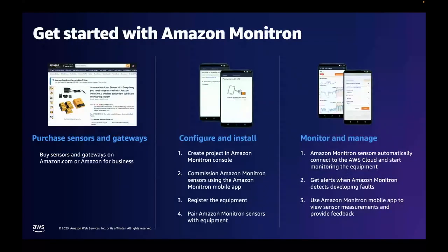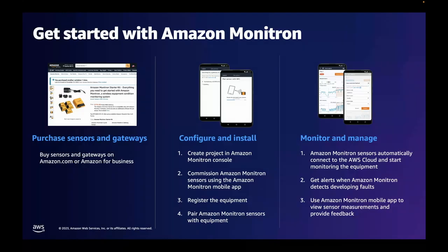Now let's talk about how to get started with Amazon Monitron. First, purchase sensors and gateways — you can buy Amazon Monitron sensors and gateways at amazon.com or Amazon Business if you want to buy in bulk using a purchase order. Amazon Monitron also offers a starter kit that includes five sensors and one gateway so you can get started in an easy and cost-effective way. Next, configure and install: create a project with the Amazon Monitron console, then using the Monitron mobile app, reliability managers can commission the Monitron gateways, register the equipment they would like to monitor, and pair the Monitron sensors to one or more positions on the equipment. The getting started guide in the console and app will take you through the setup step-by-step with no special training required.